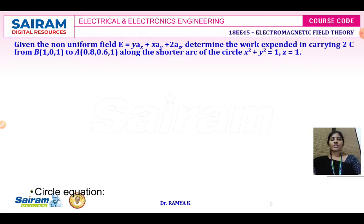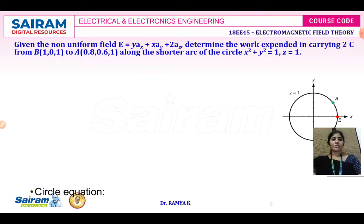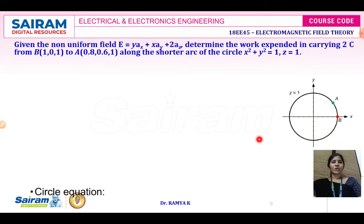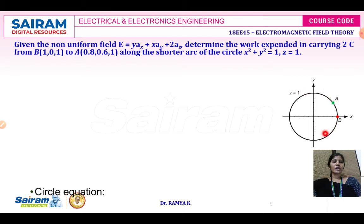So here you are supposed to move the point charge of 2 coulombs from point B to point A in the presence of your electric field E = yAx + xAy + 2Az. This is the diagram showing your problem. Once the problem is read, convert the problem into a pictorial representation. Here they have told it is moving along the shorter arc of a circle X² + Y² = 1 and Z = 1.